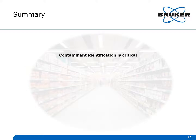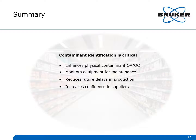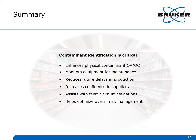In summary, contaminant identification for food production is critical. It enhances physical contaminant QA/QC programs, helps monitor equipment for maintenance, helps reduce future delays in production, helps increase confidence in suppliers, assists with false claims investigations, and helps optimize overall risk management. Handheld XRF is an ideal technology solution for some of food production's most pressing challenges.